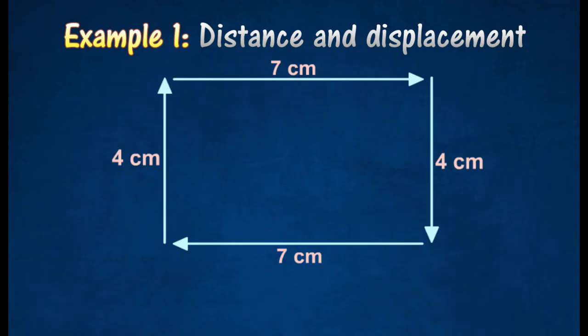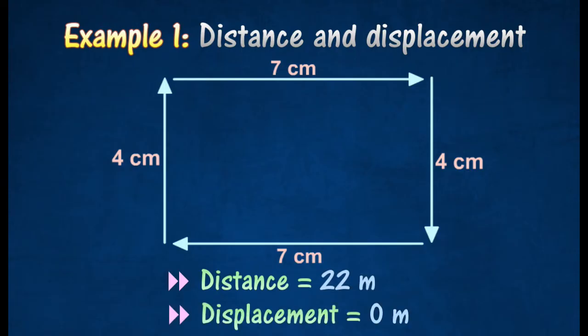Even though the man has walked a total distance of 22 meters, his displacement is 0 meters. This is because he returned to his original position, that is, he has not moved away from his starting point despite walking a distance of 22 meters.